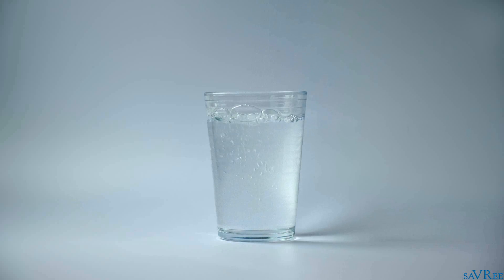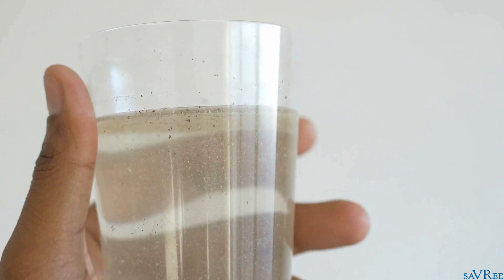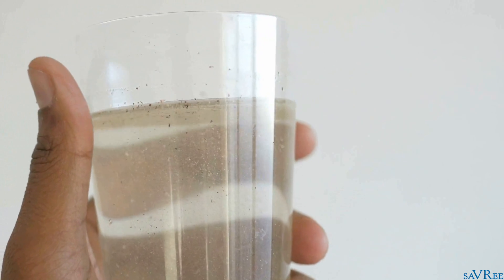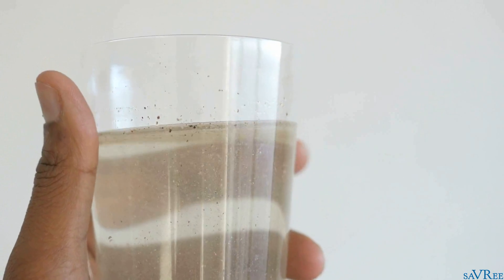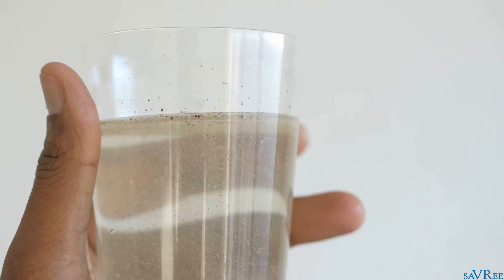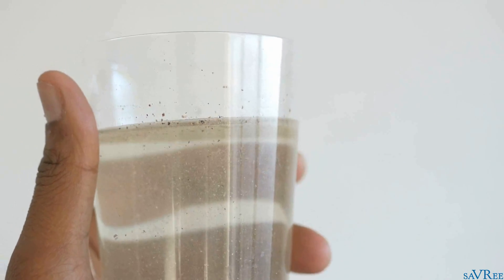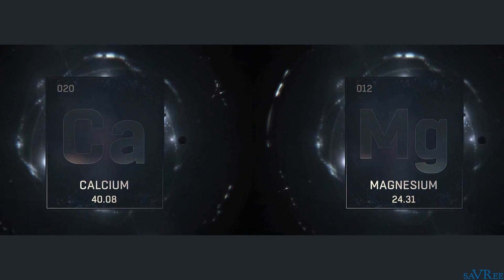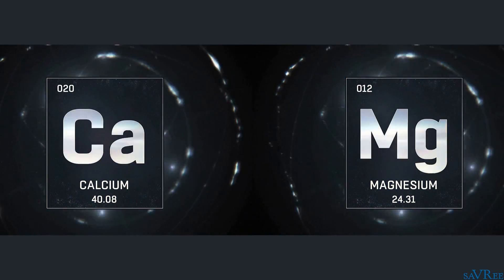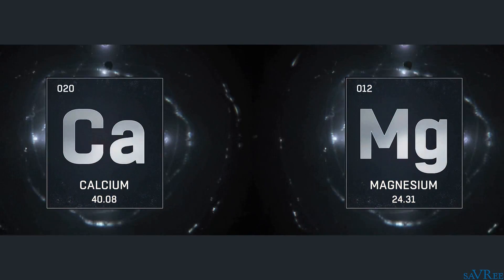For example, water may contain suspended solids — bits of mud, sand, dirt, and other particles that are suspended in the water. Water may also contain dissolved solids. This includes minerals like calcium, magnesium, silica, potassium, and sodium.